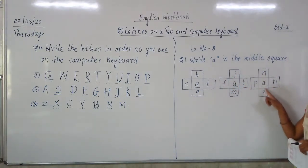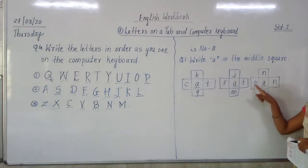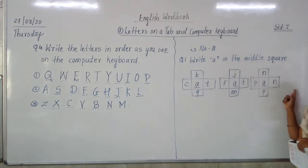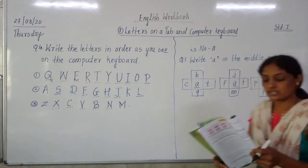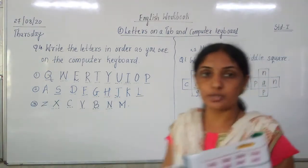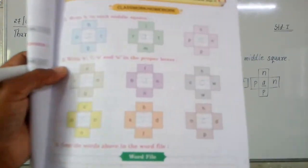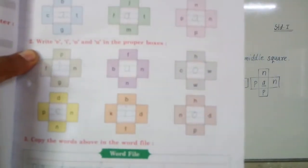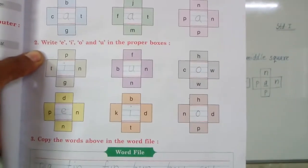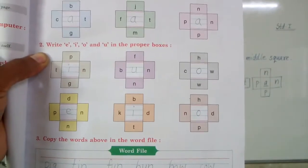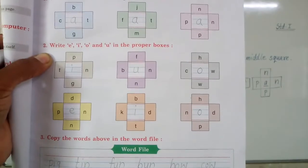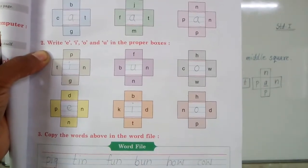N-A-P, N-A-N, P-A-N, P-A-N, F-I-N, F-I. After that is Question number 2. Can you see Question number 2 in your book? It is given: Write E, I, O and U in the proper boxes.